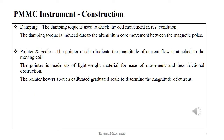The damping torque is used to check the coil movement at rest condition. The damping torque is induced due to the aluminum core movement between the magnetic poles. The pointer is used to indicate the magnitude of current flow in the attached moving coil. The pointer is made up of lightweight material for ease of movement and less frictional obstruction. The pointer hovers about a calibrated graduated scale to determine the magnitude of current.